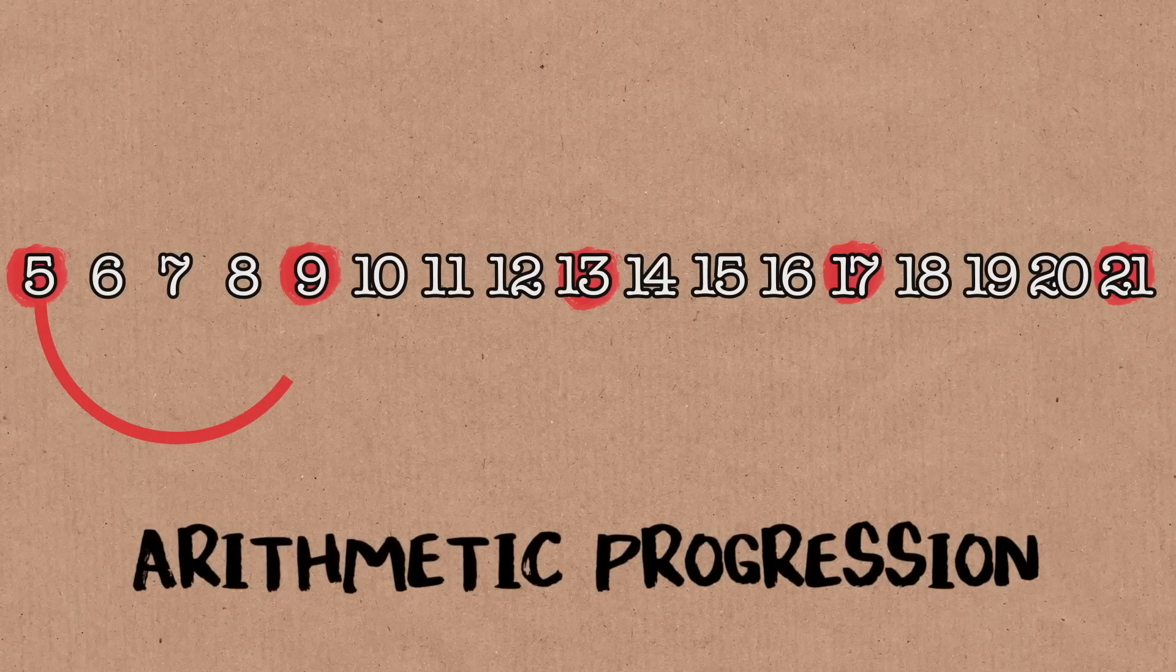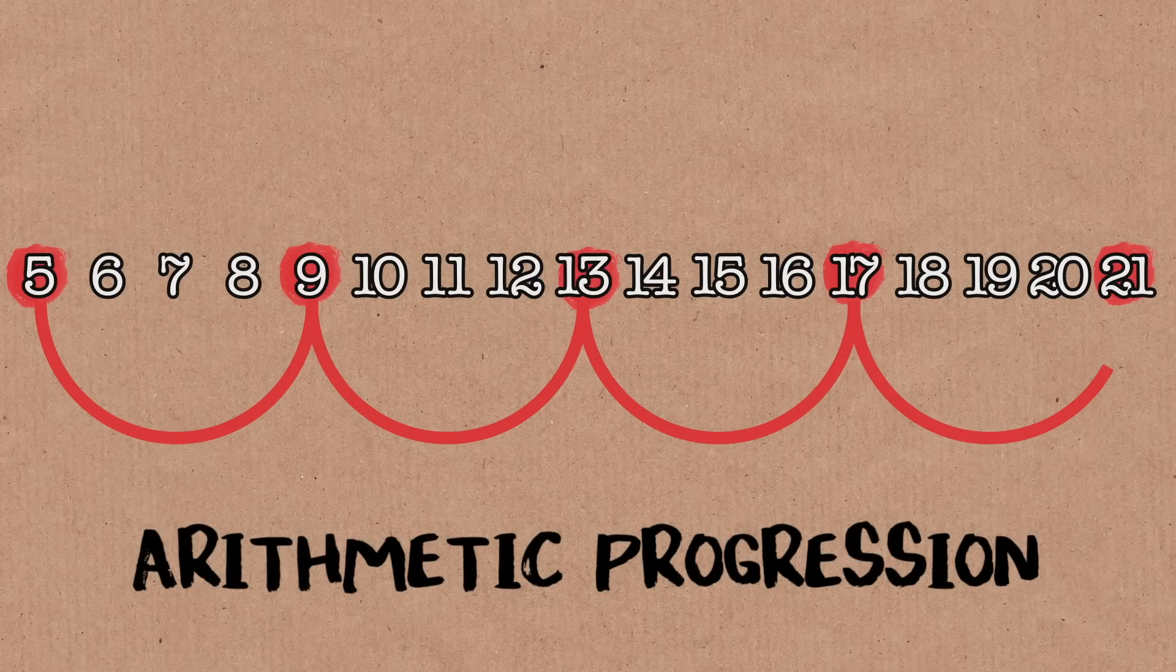However you do it, it's possible to find an arithmetic progression, and that is a set of integers like 5, 9, 13, 17, 21, where the step between each one and the next is the same, however long you want.